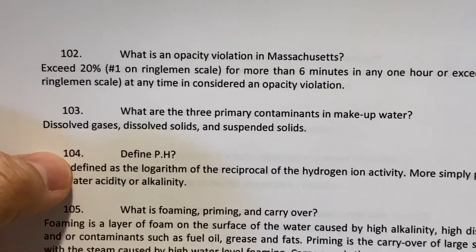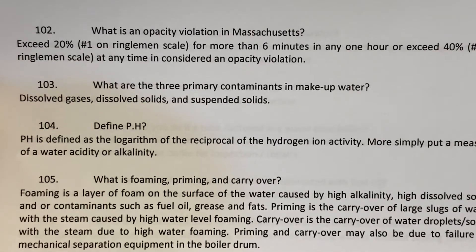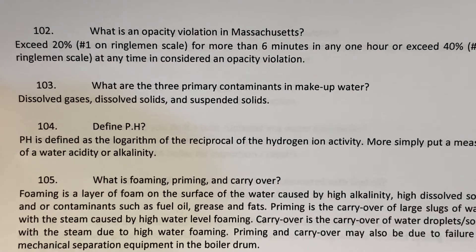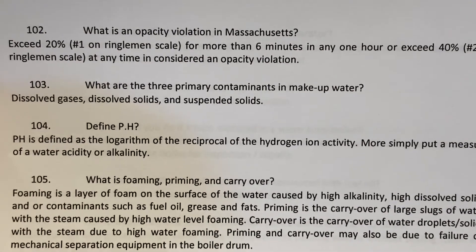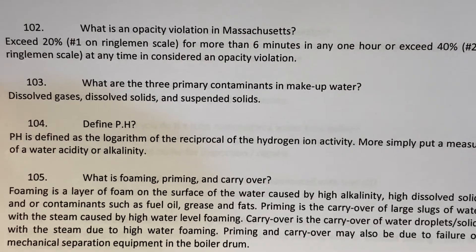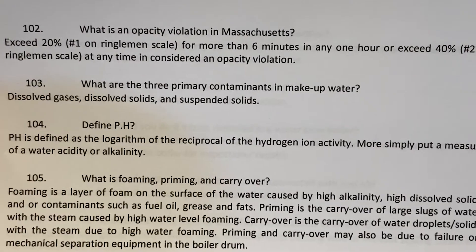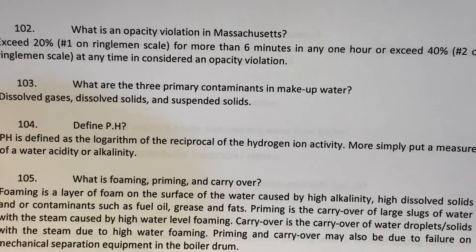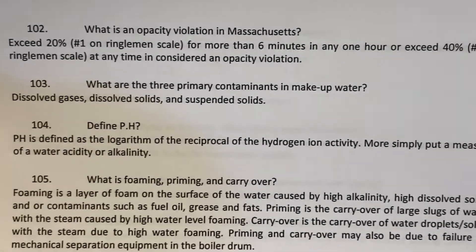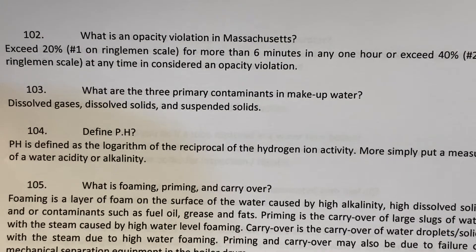What is an opacity violation in Massachusetts? Exceeding 20% — number one on the Ringelmann scale — for more than six minutes in any one hour is one opacity violation. Exceeding 40% — number two on the Ringelmann scale — at any time is also considered an opacity violation.